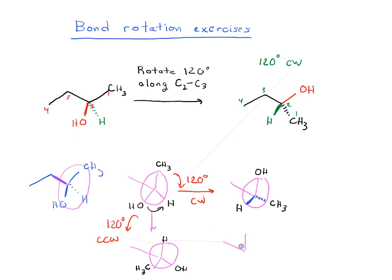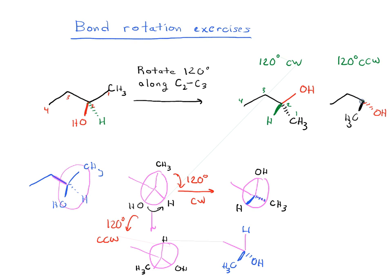So this CH₃ is now going to be a wedge. The OH is where the H was, and that makes it a dash. And the H is where the CH₃ was, so it is going to be a straight line. So if we did it 120 degrees counterclockwise, you should get: CH₃ is a wedge, OH is a dash, and H is a flat straight line. So that is doing bond rotation for carbon 2 clockwise or counterclockwise 120 degrees.